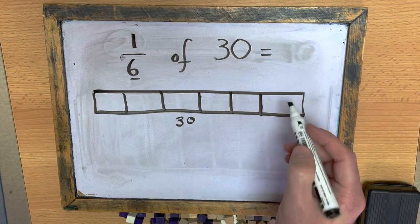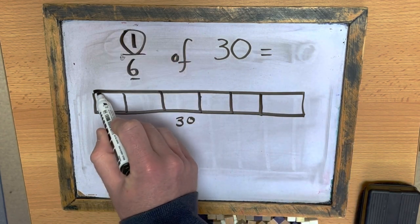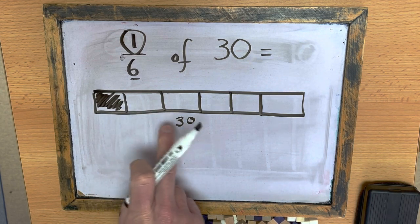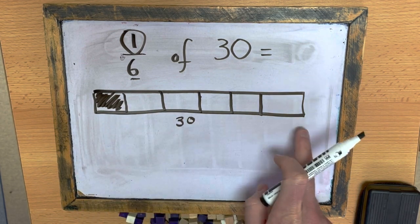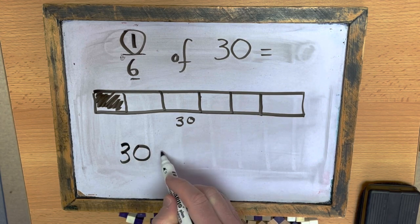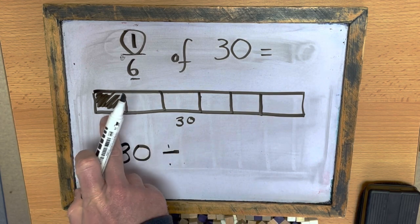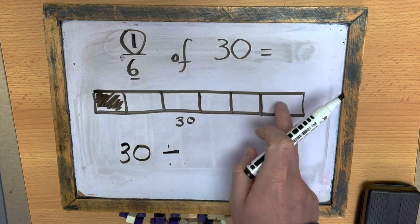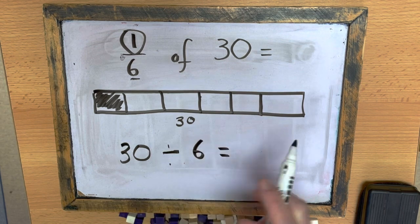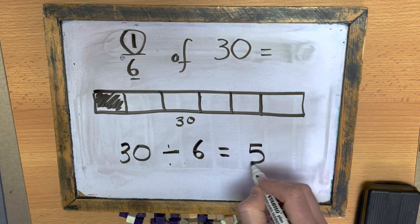And I need to work out what one of these boxes is worth. And I can do that by taking all of the bar, which is 30, and I can divide it by 6. And 30 divided by 6, hopefully you should know, is 5.